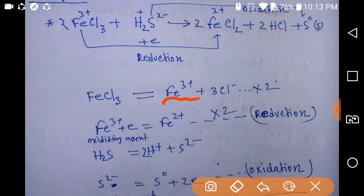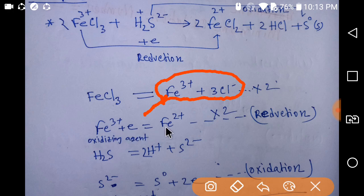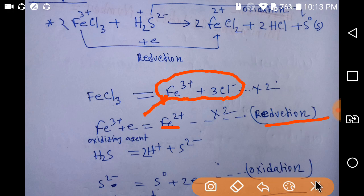This is iron and three chloride. This ferric ion will take one electron and will become ferrous ion, which has a 2+ charge. So this ferric ion is the oxidizing agent, and since in this process an electron is gained, this is a reduction process.